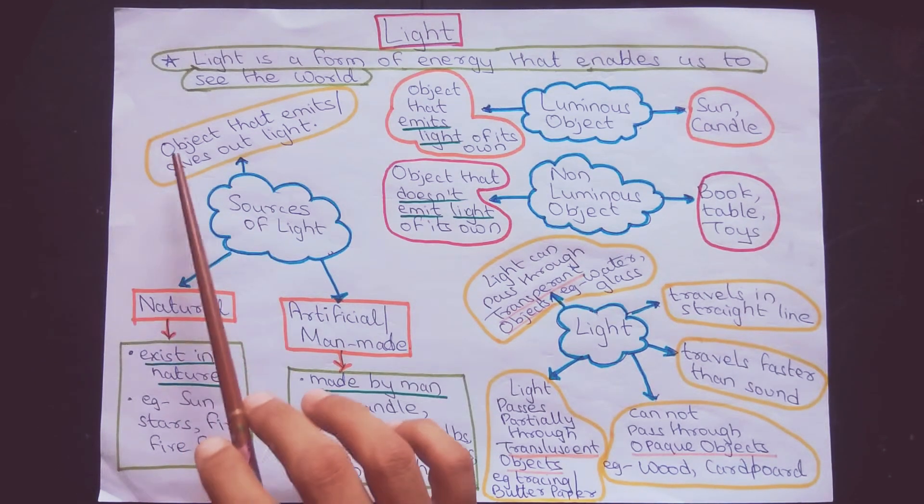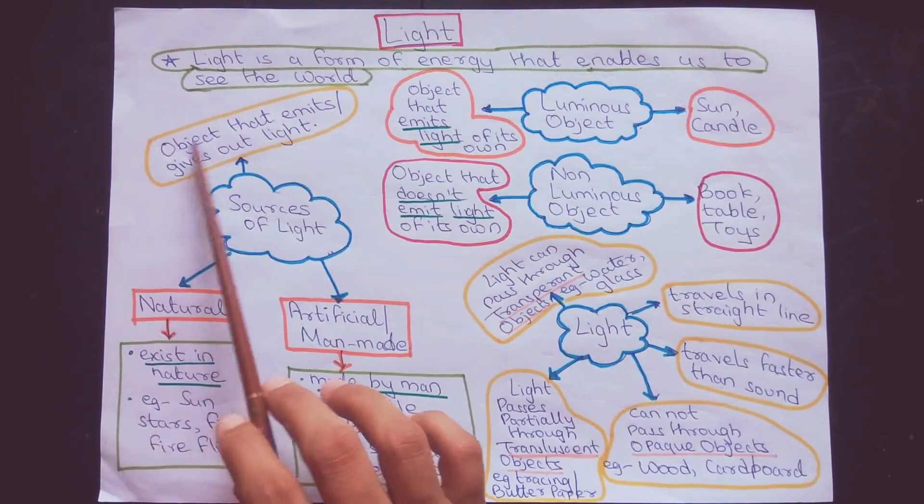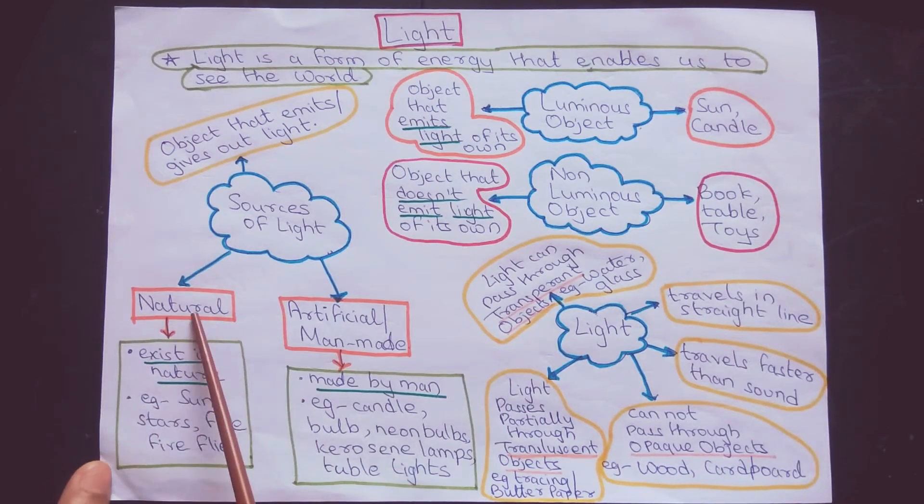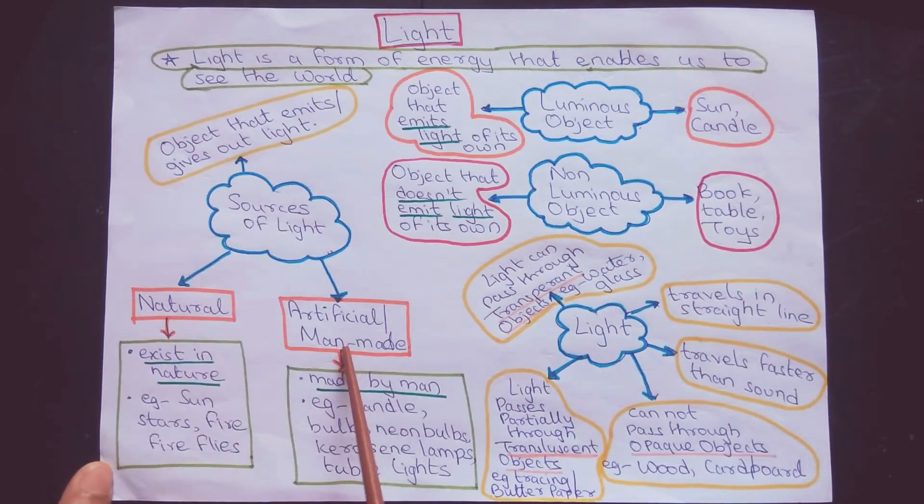Sources of light: objects that emit or give out light are known as the sources of light. Sources of light are of two types: natural sources and artificial or man-made sources.